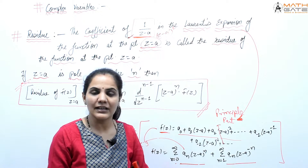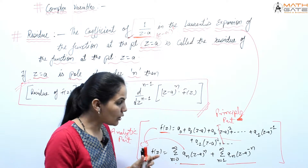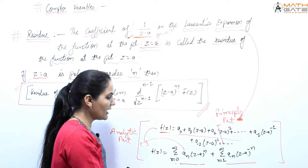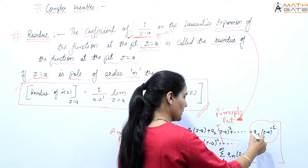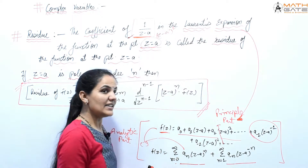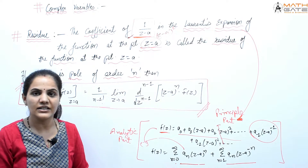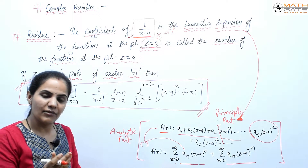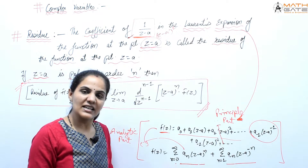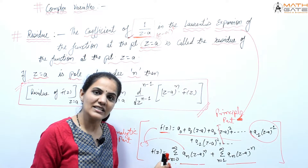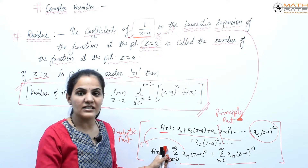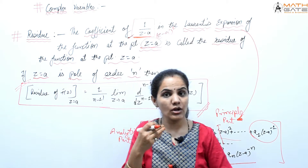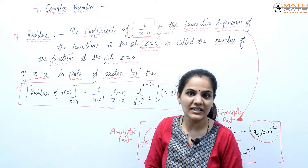In the Laurent series, the (z−a)^(−1) term — that is, the a₋₁ portion — is called the residue. So the coefficient of 1/(z−a), i.e., (z−a)^(−1), in the Laurent series is the residue. Now let's understand how to find the residue.